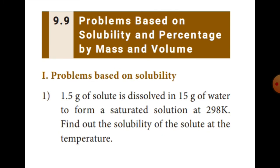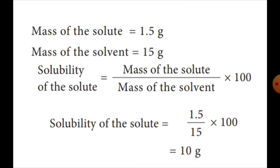Now let us see the problems based on solubility and percentage by mass and volume. Problem 1: 1.5 grams of solute is dissolved in 15 grams of water to form a saturated solution at 298 K. Find out the solubility of the solute at that temperature. Mass of solute = 1.5 g, mass of solvent = 15 g.